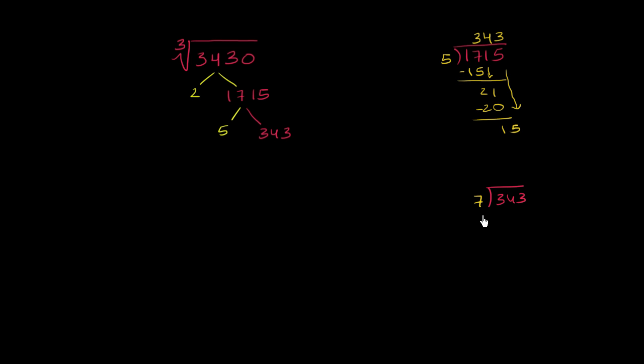7 doesn't go into 3, 7 goes into 34 four times. 4 times 7 is 28, subtract, 34 minus 28 is 6, bring down a 3. 7 goes into 63 nine times, 9 times 7 is 63, subtract, we don't have any remainder.